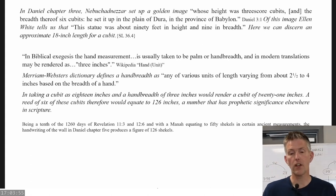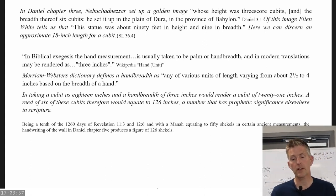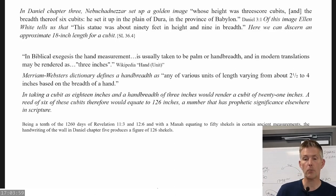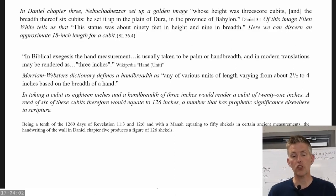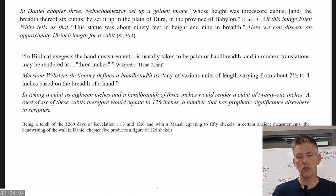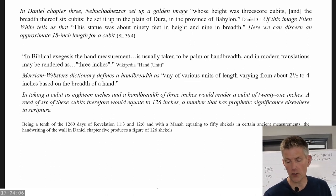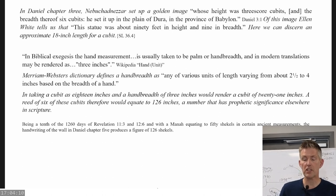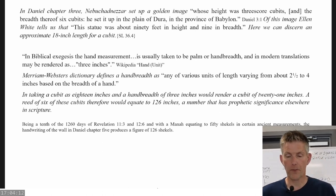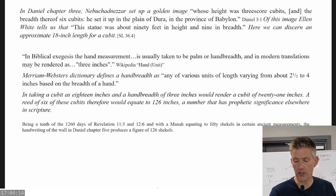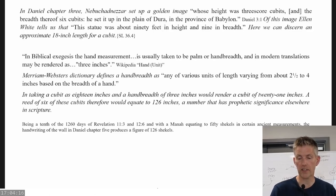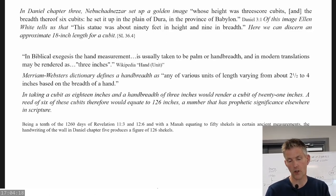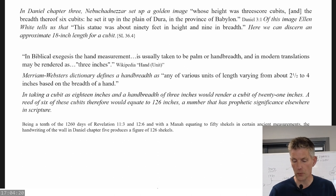And then it talks about the hand breadth here. Merriam-Webster's dictionary gives it as between 2.5 to 4 inches. Wikipedia says it can be rendered as 3 inches. So in taking a cubit as 18 inches and a hand breadth of 3 inches would render a cubit of 21 inches in this instance concerning this temple. So a reed of six cubits would equate to 126 inches, a number that has prophetic significance elsewhere in Scripture. So 126 inches is also 10 and a half feet. So that there is going to be the measurement of the cubit, 21 inches, in relating to Ezekiel's temple. I believe that's how God would have us to measure this temple on the altar.